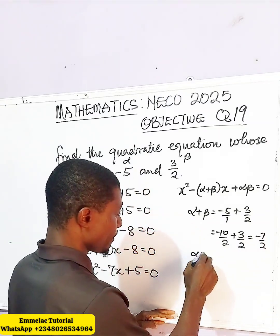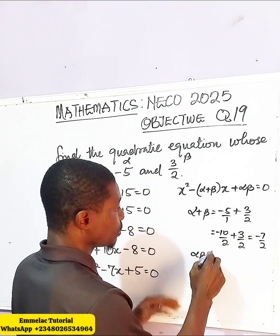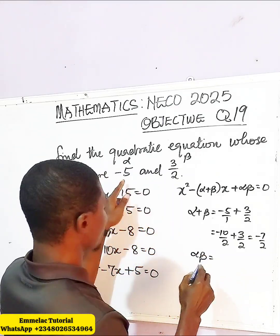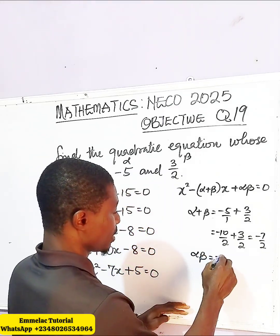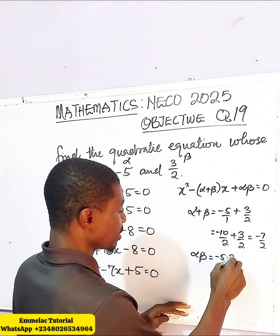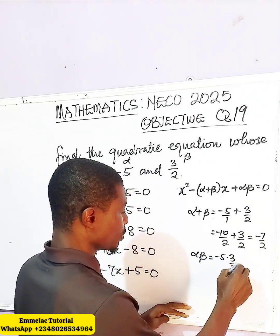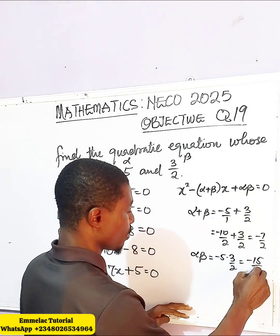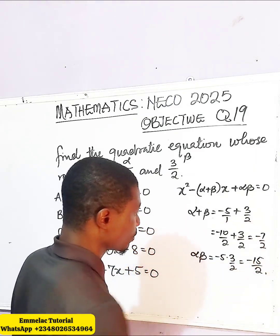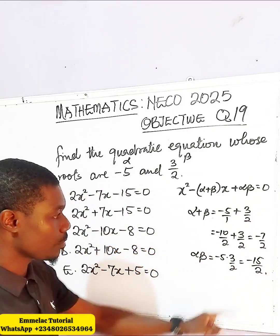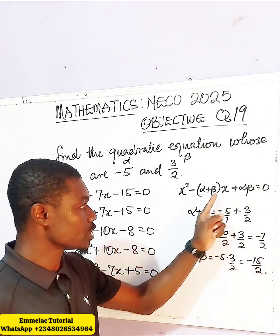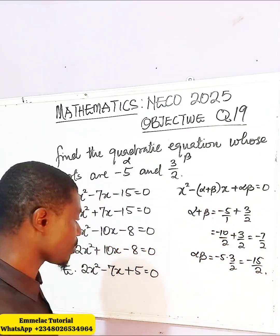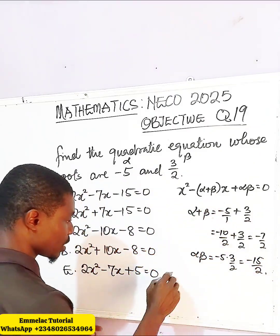For the product, this gives us negative 5 times 3 over 2, giving us negative 15 over 2. Let us now plug this into the above equation.